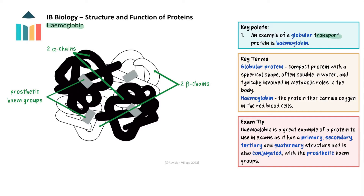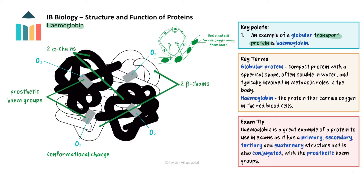Haemoglobin is a transport protein. It is composed of four protein subunits arranged in a quaternary structure. In adults, there are two alpha and two beta subunits forming the haemoglobin molecule. Each of the four globin subunits contains a prosthetic haem group that contains an iron atom at its centre. The iron atoms bind to oxygen molecules. When oxygen binds to one iron atom, it causes a conformational change in the protein, making it easier for the other subunits to bind additional oxygen molecules. As a result, haemoglobin becomes progressively better at binding oxygen as more oxygen molecules bind — this is essential for efficient oxygen uptake in the lungs and oxygen release in tissues.